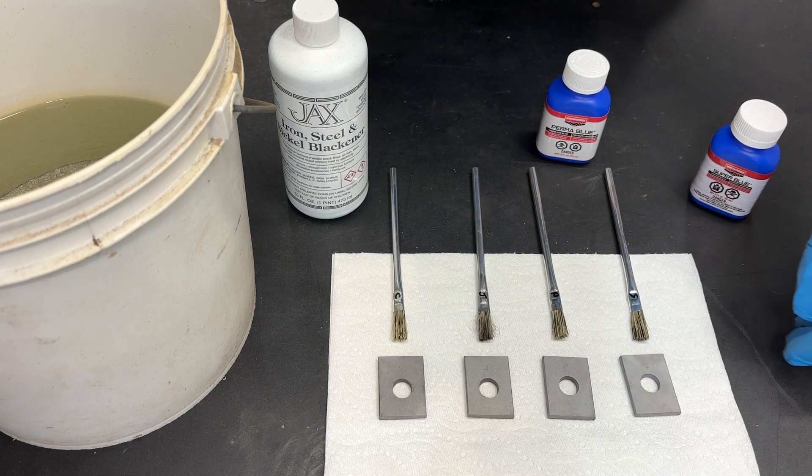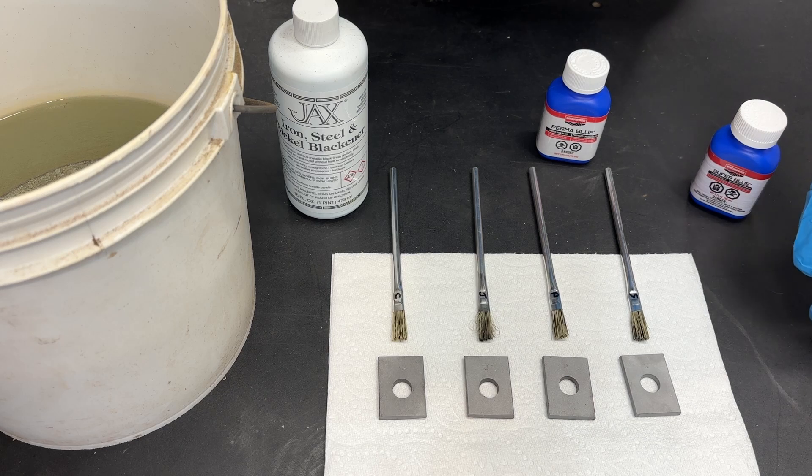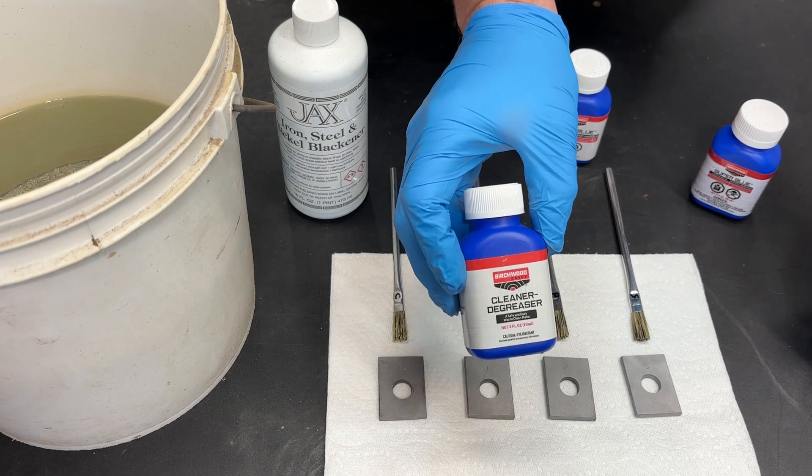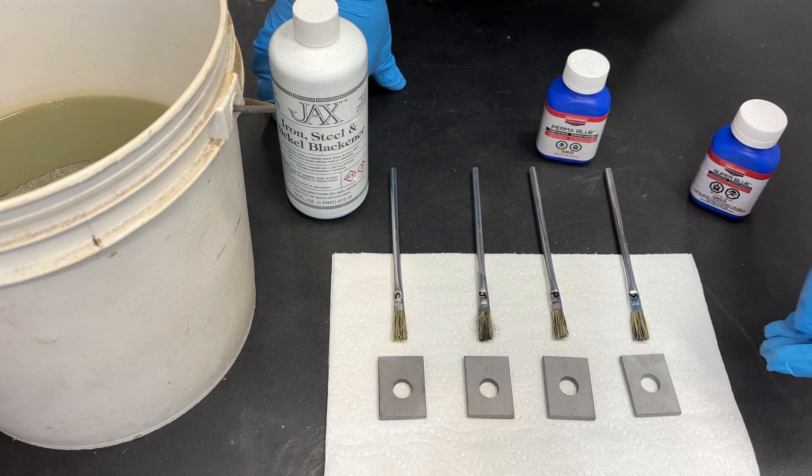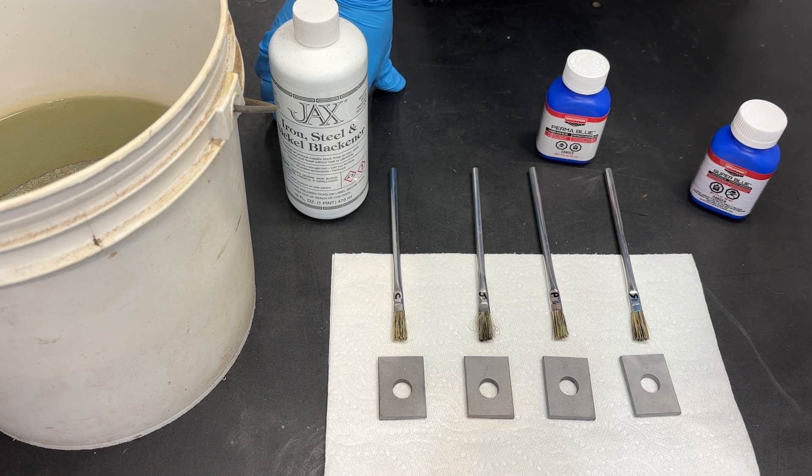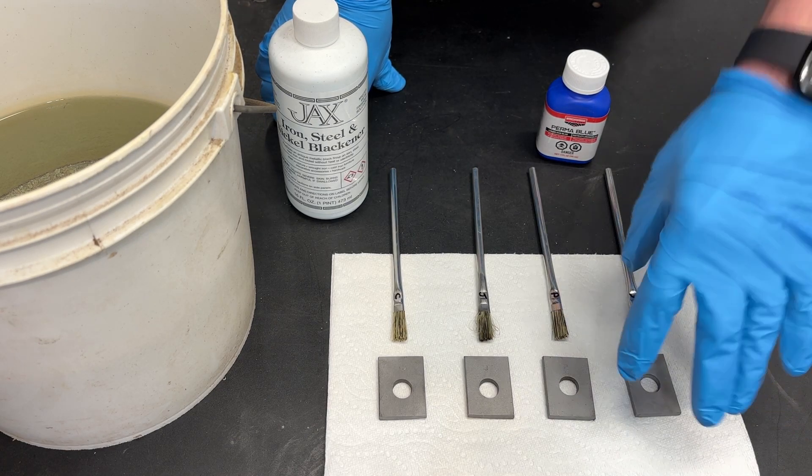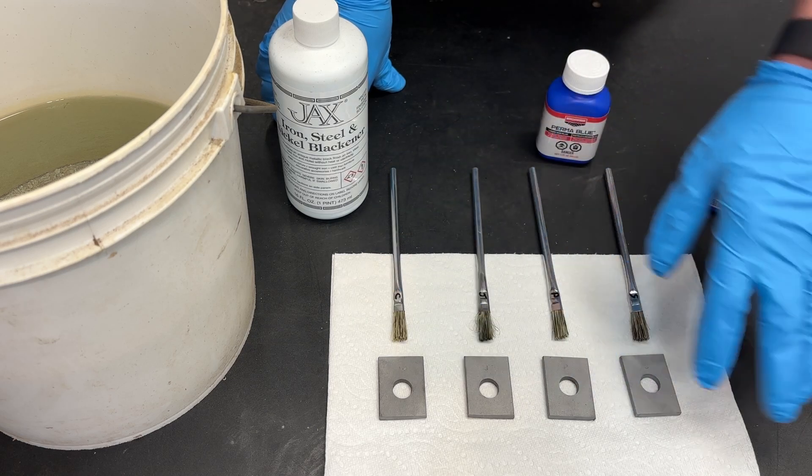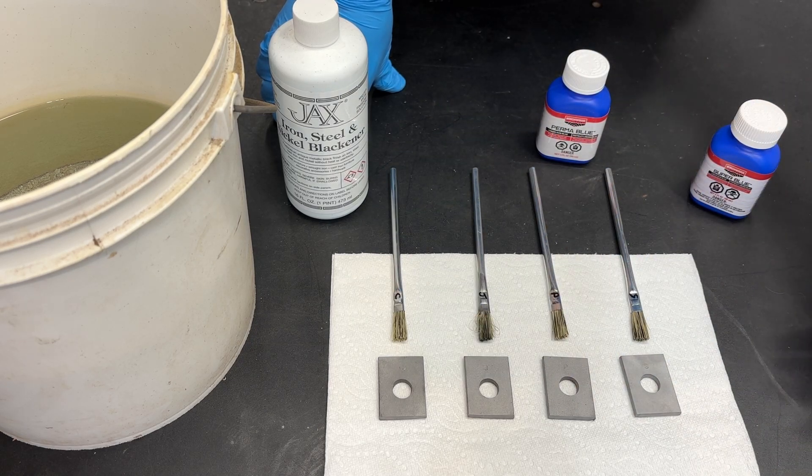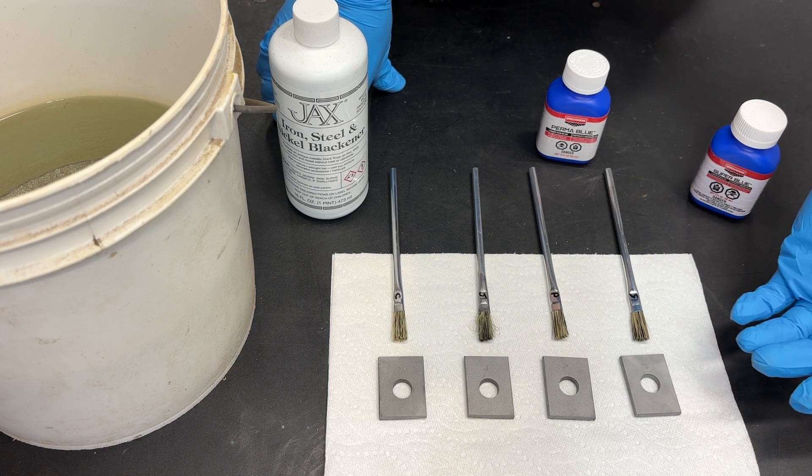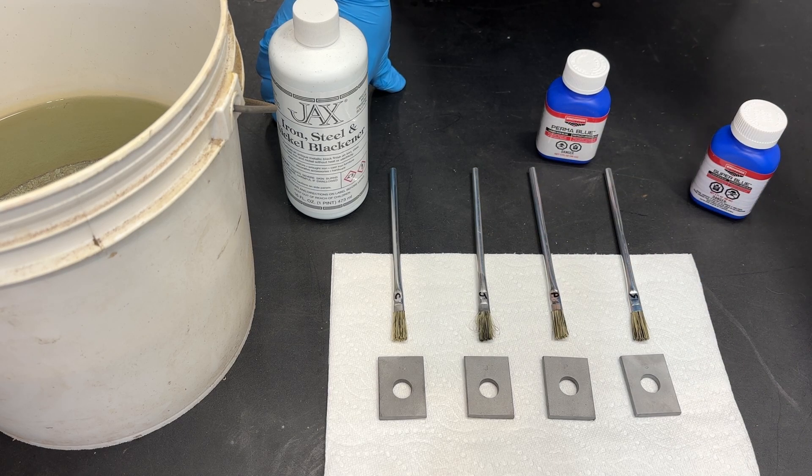After I sandblasted and polished these pieces, I used this right here, just a cleaner degreaser. Now I think any cleaner degreaser would work. In the past I've used brake clean, I've used paint prep, just something that goes in, cleans, degreases, and then evaporates without leaving a residue. The chemical I just showed you came with the kit that I bought. So I figured might as well use it.